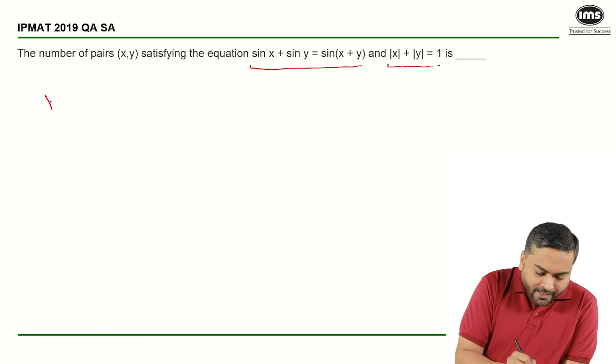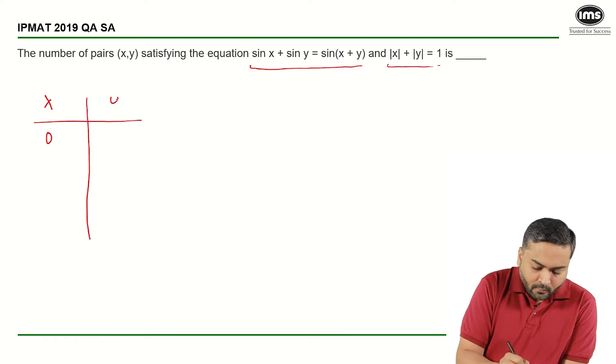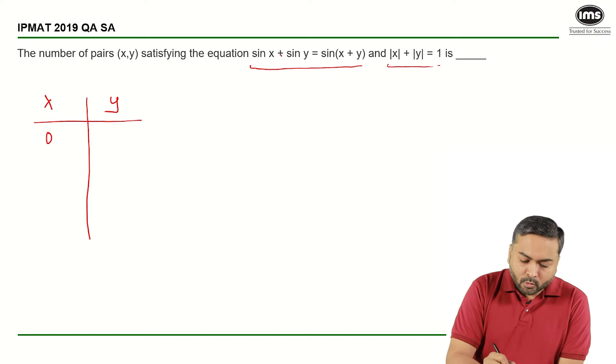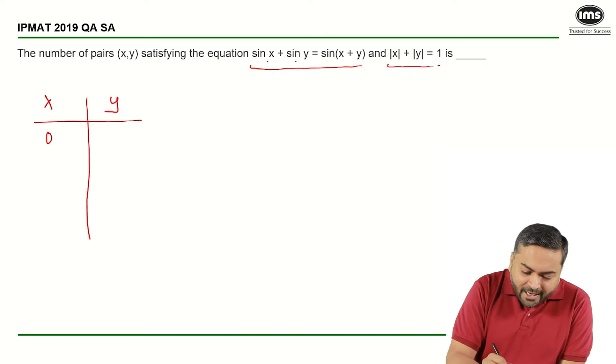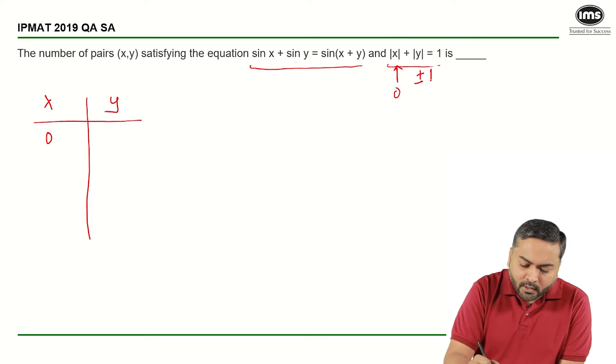If I assume x is equal to 0, what is sin of 0? sin 0 is 0, right? So basically I will have sin y is equal to sin y, and I have put x is equal to 0 here, y can be plus or minus 1.